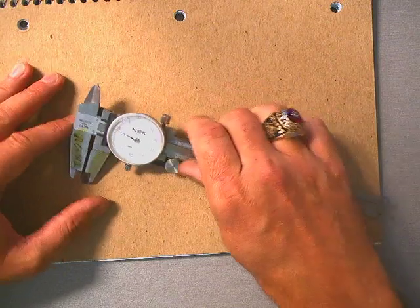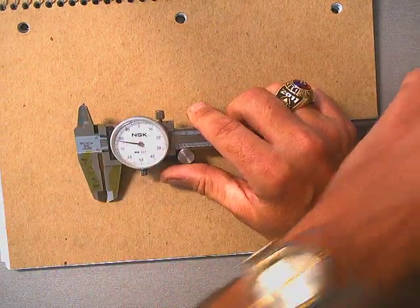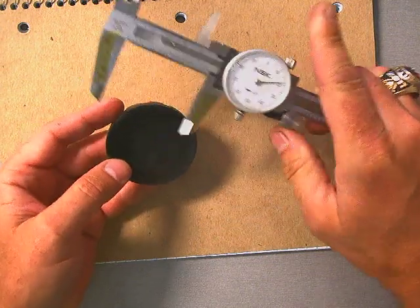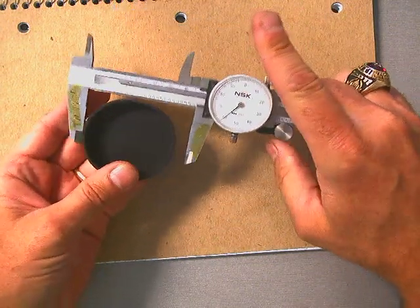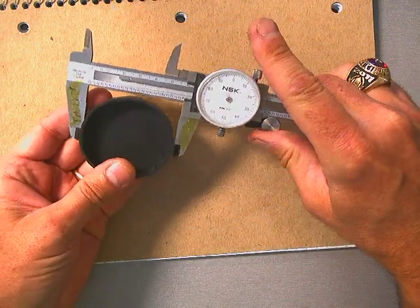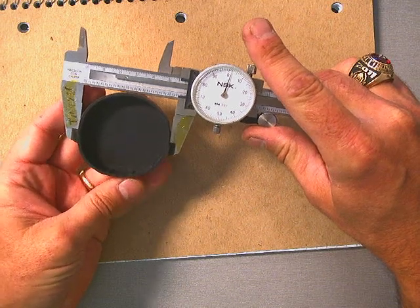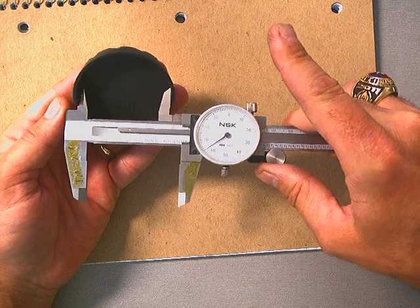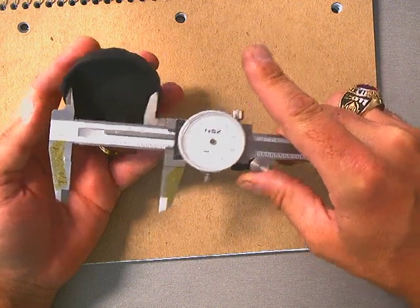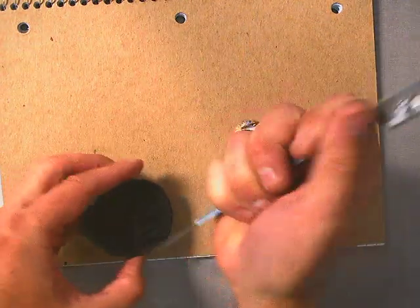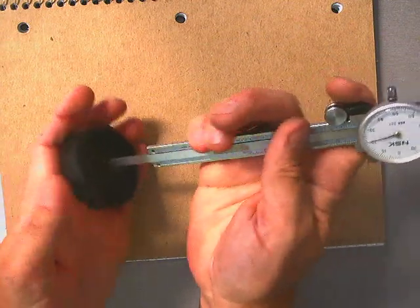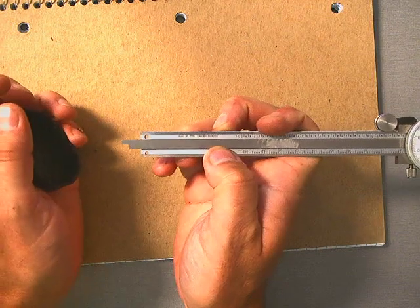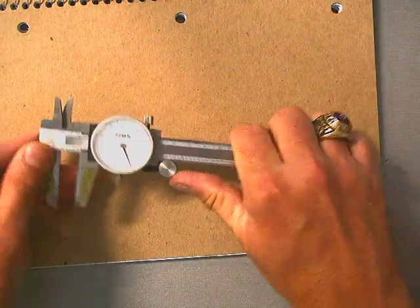We can measure three different ways with this one tool. These jaws are used to measure OD, outer diameter. These jaws are used to measure ID, inner diameter. And you can also measure depth using the pin.